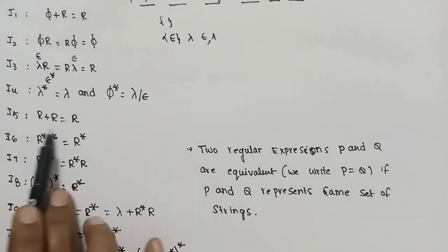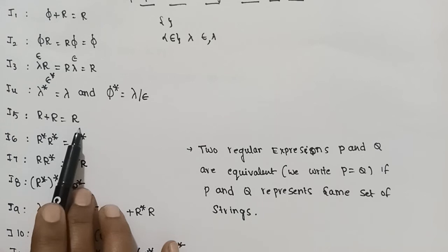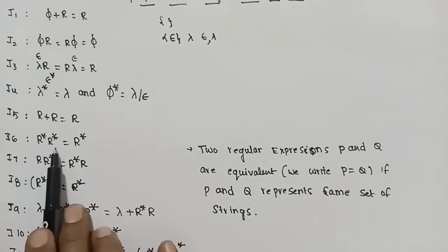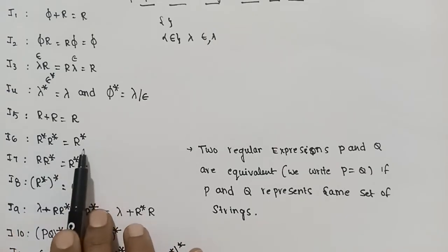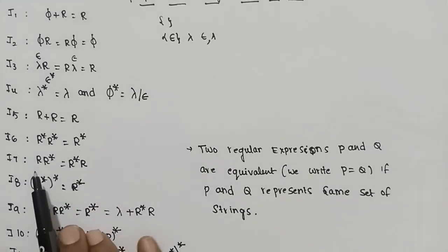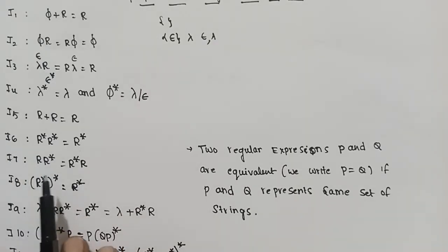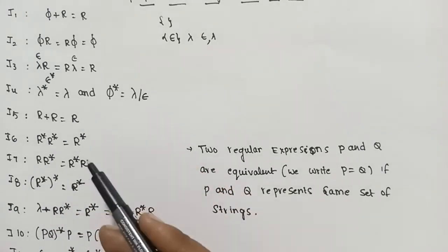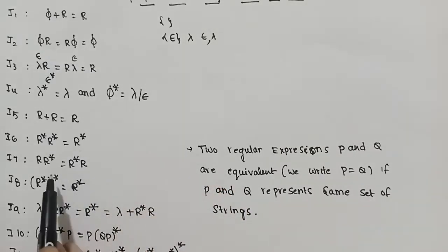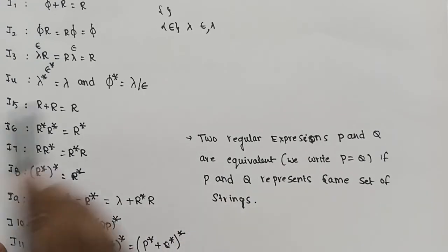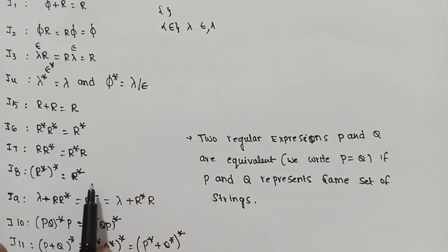Next is the fifth property: the union of two regular expressions is again a regular expression. Property 6: R* concatenated with R* equals R*. Property 7: regular expression Kleene closure concatenation gives R* · R = R · R* = R*. Also, Kleene closure of a Kleene closure equals the original Kleene closure: (R*)* = R*.